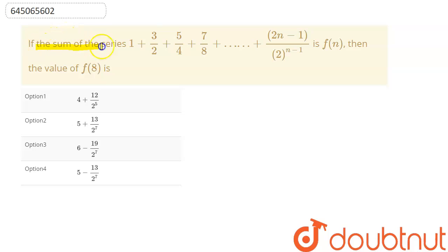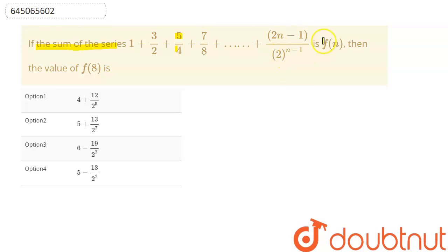We are given: if the sum of the series 1 + 3/2 + 5/4 + 7/8 + ... up to (2n−1)/2^(n−1) is f(n), then find the value of f(8). The given options are: option 1 is 4 + 12/2^5,